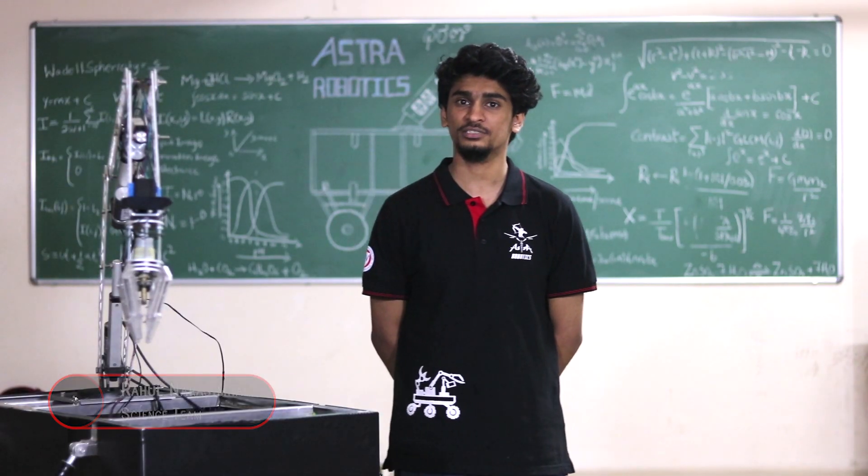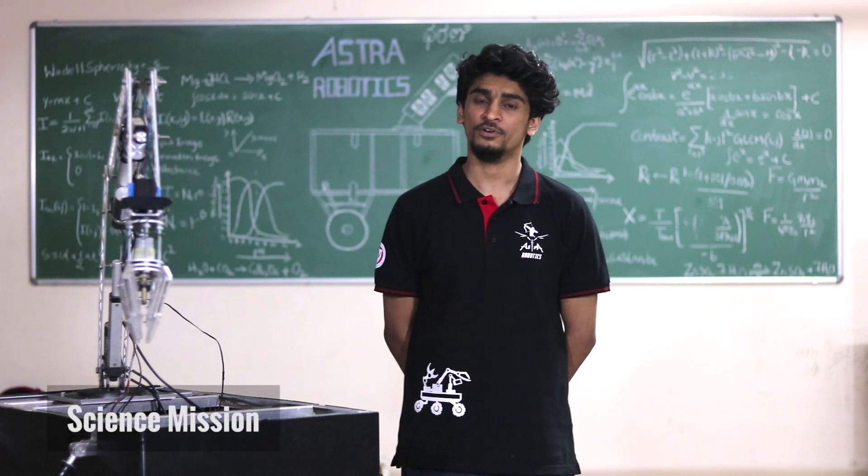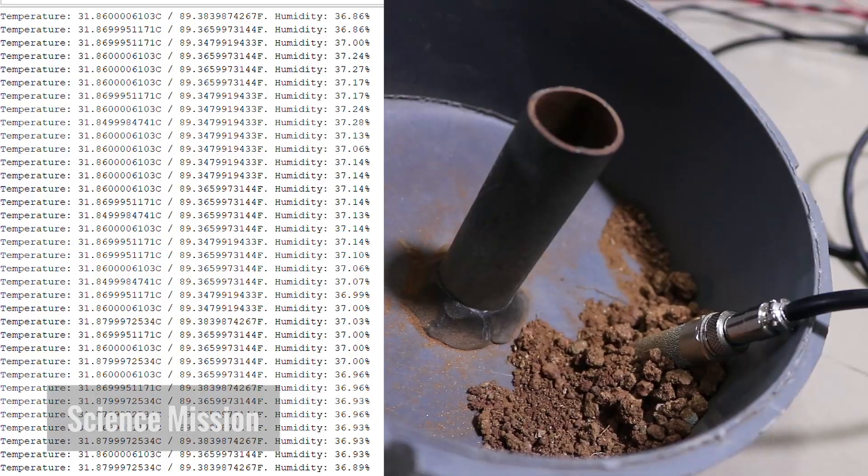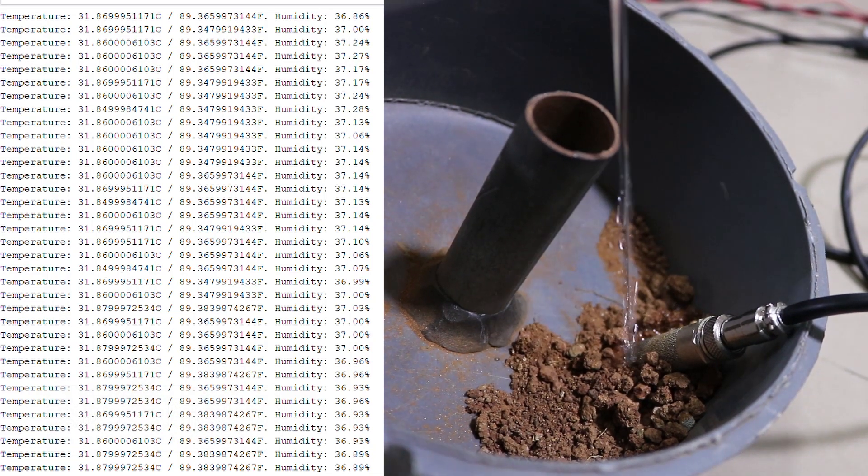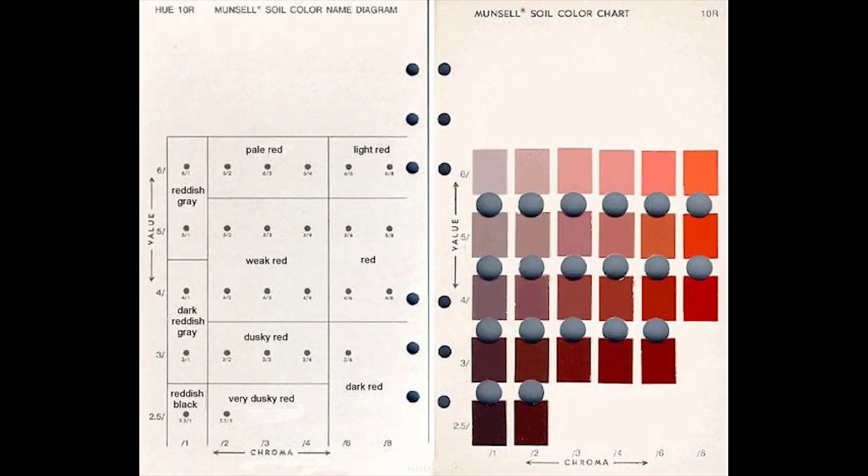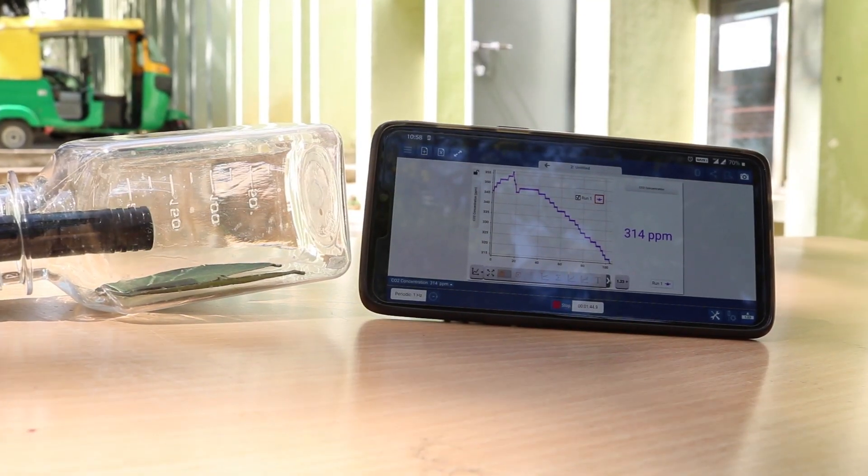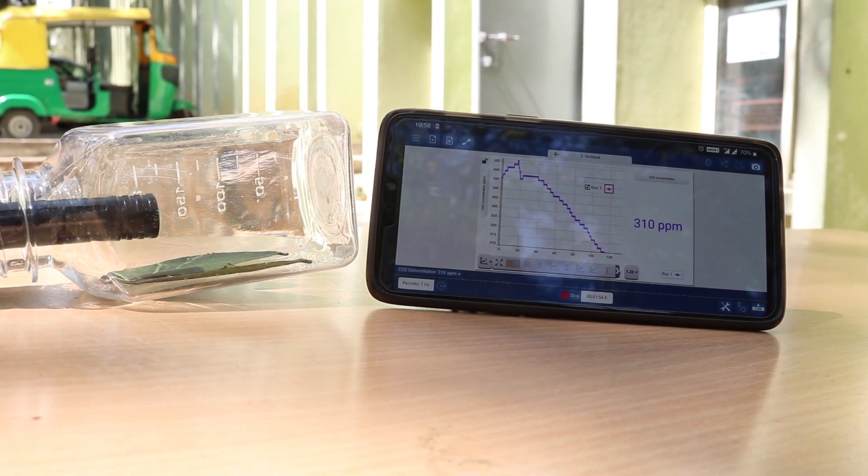As specified in the science mission this year, we are focused on finding extinct and extant life and also performing the tests completely on board the rover. We perform basic tests like temperature and humidity using sensor SHT10 and soil color test based on the Munsell color chart. We perform a CO2 test on the soil sample collected to measure the change in CO2 concentration which can indicate the presence of aerobic life.